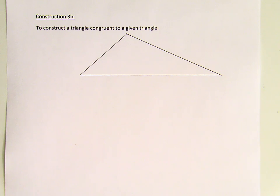The following is a construction which is not in our book, which is construction 3B because it is based on the idea we use for construction 3. It is to construct a triangle congruent to a given triangle.